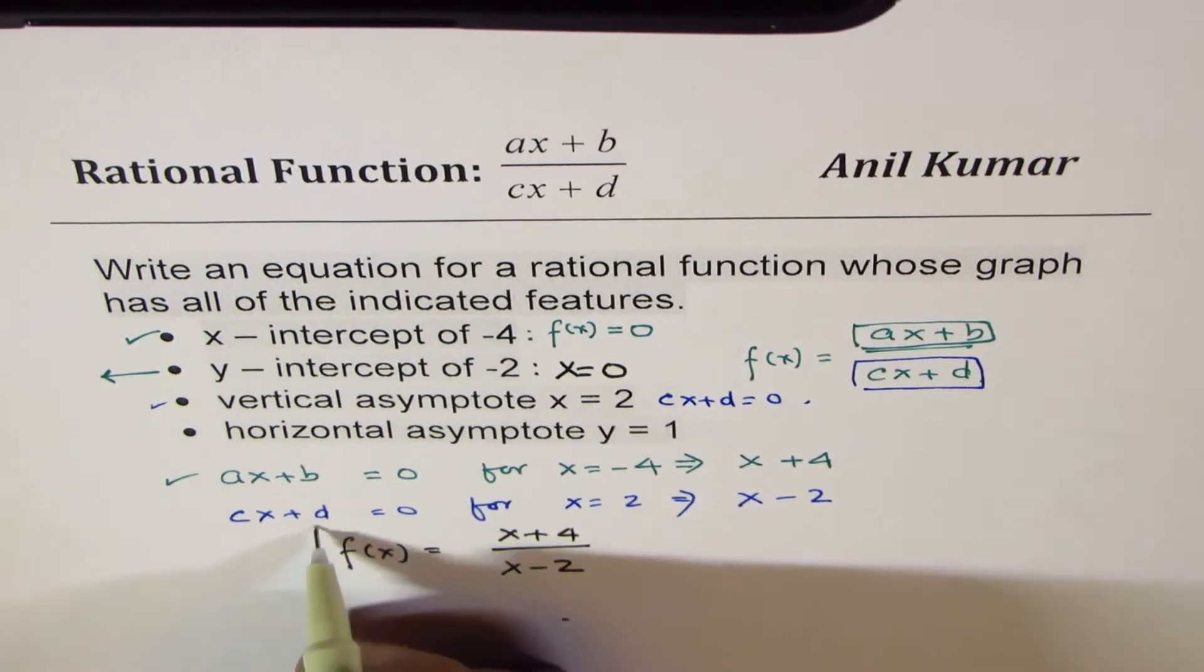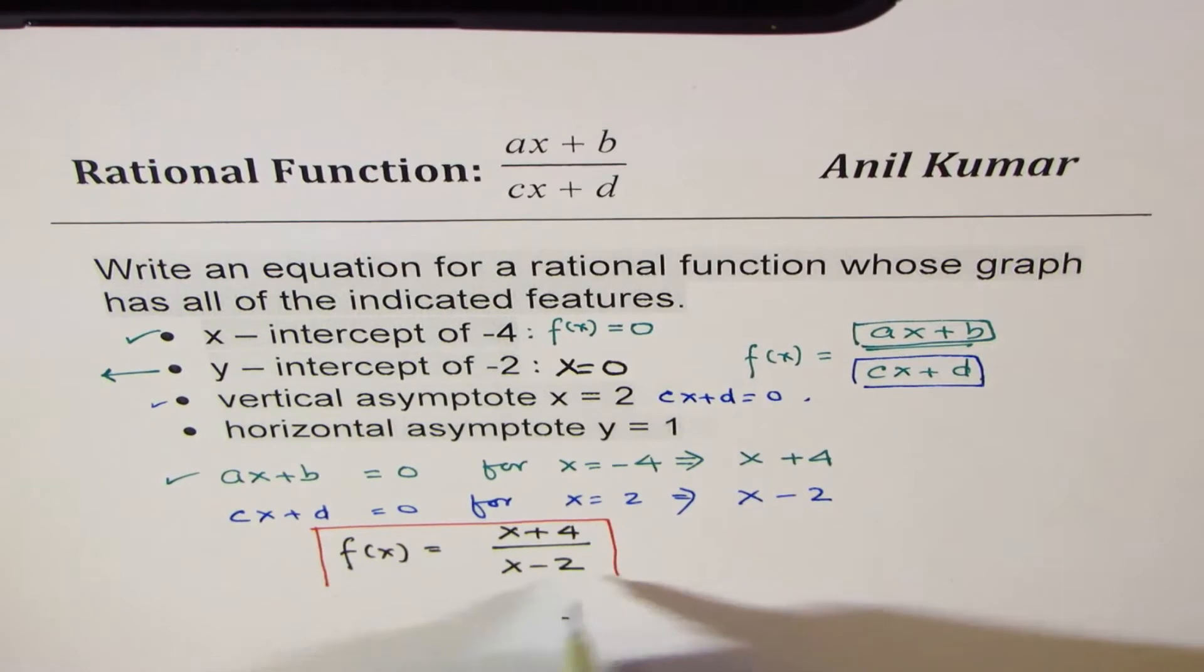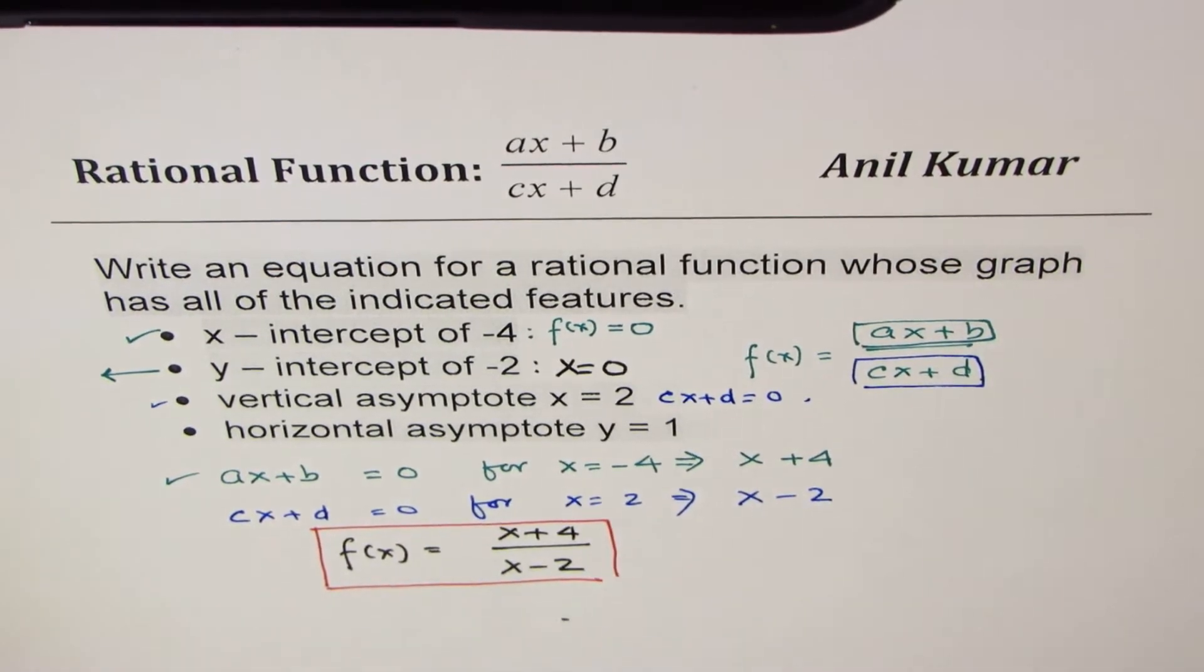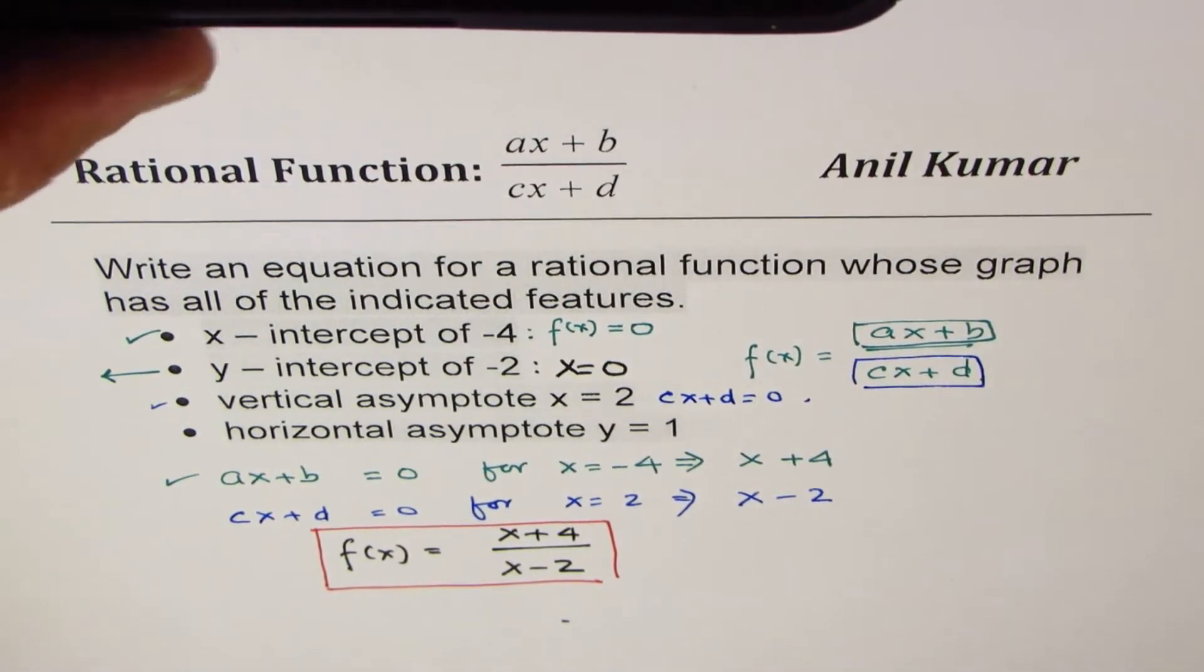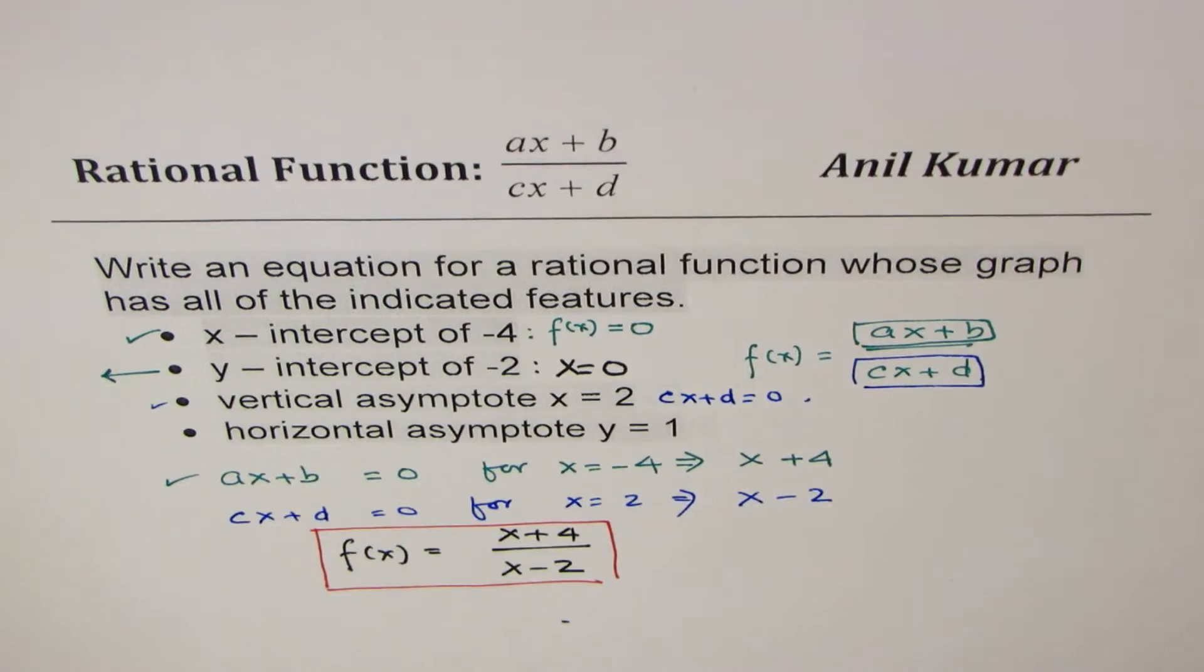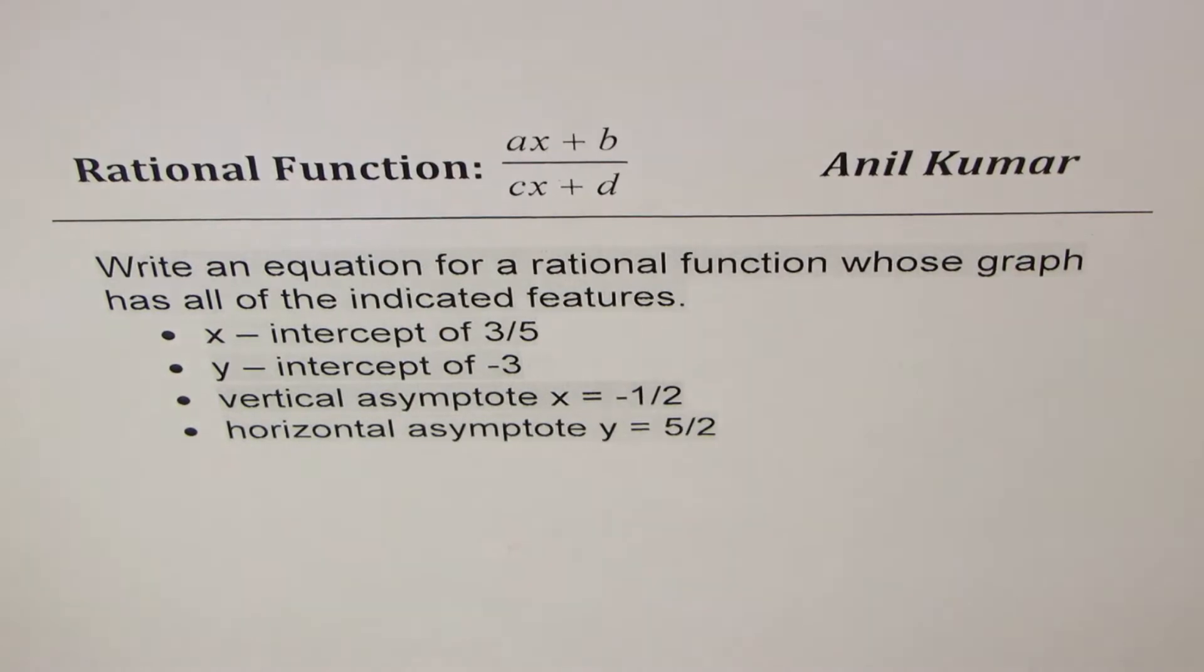Perfect. So we get our result as f of x equals to x plus 4 over x minus 2. So it is that simple. Now let's do one more example. I'll use a different strategy here.